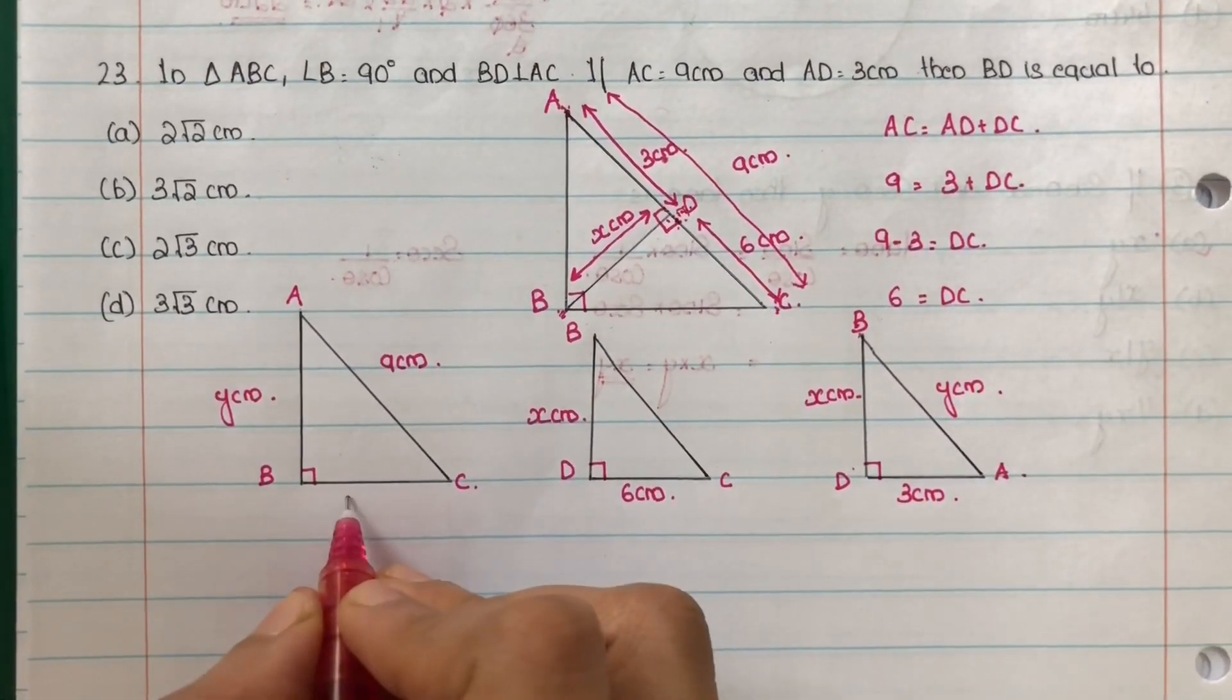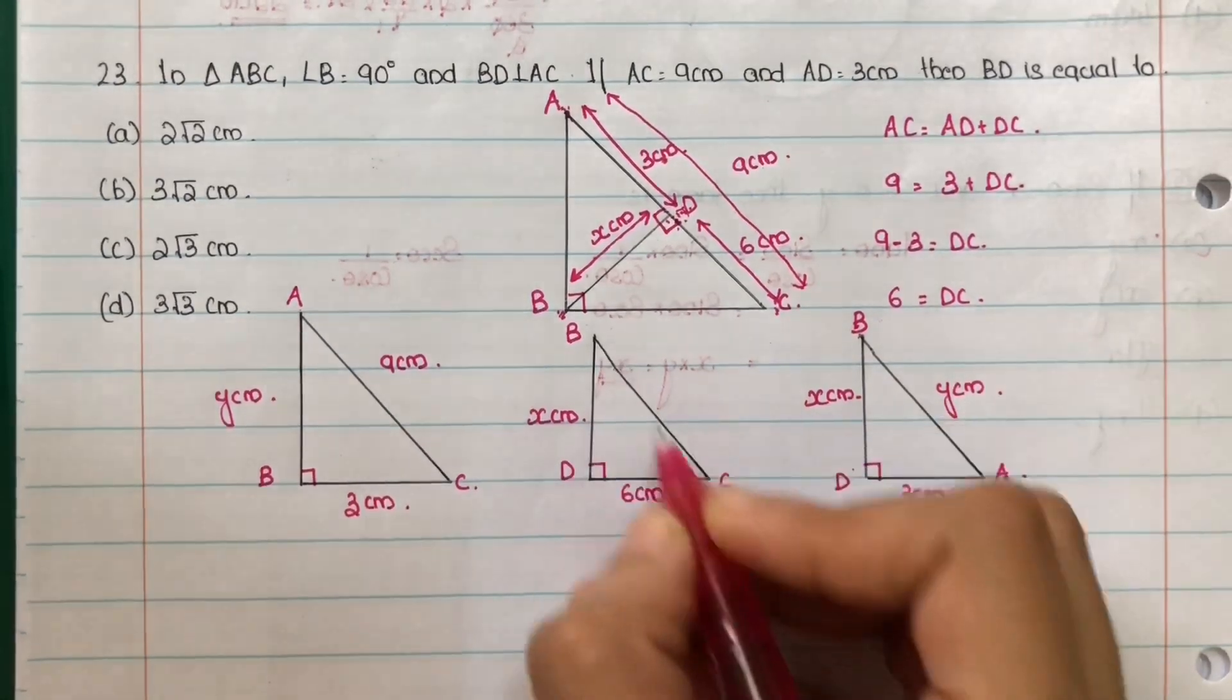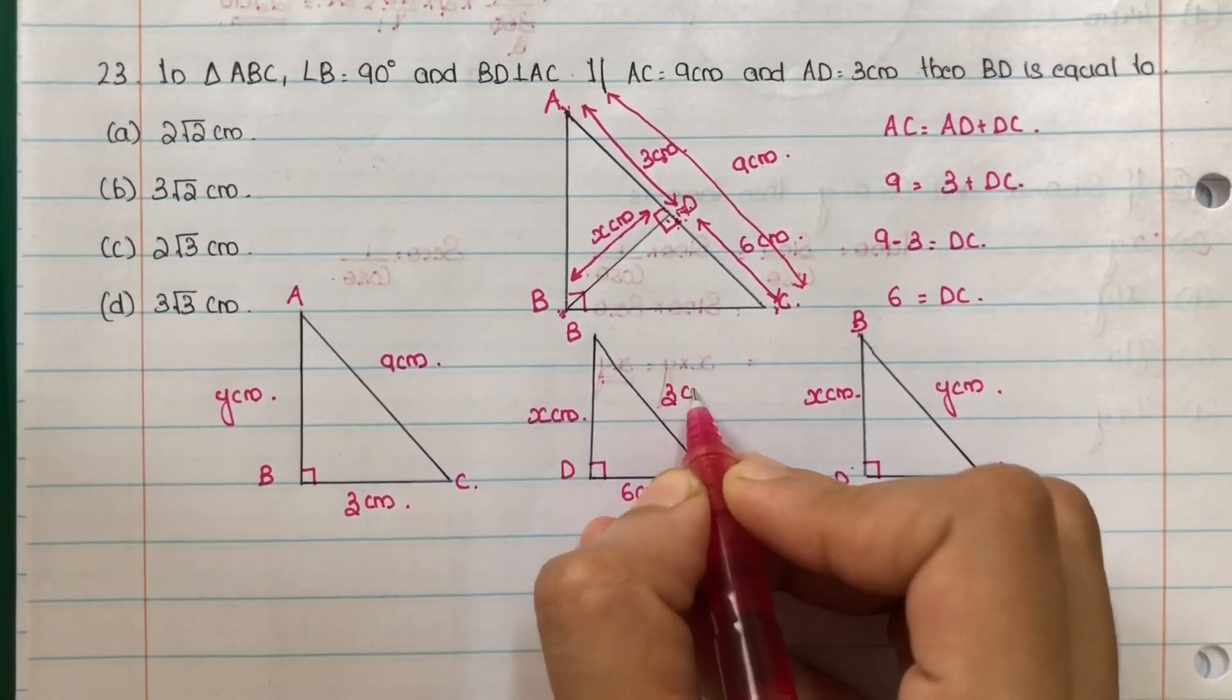Next, AB, let AB is equal to y cm. Next, BC. BC is equal to z cm. BC equal to z cm.